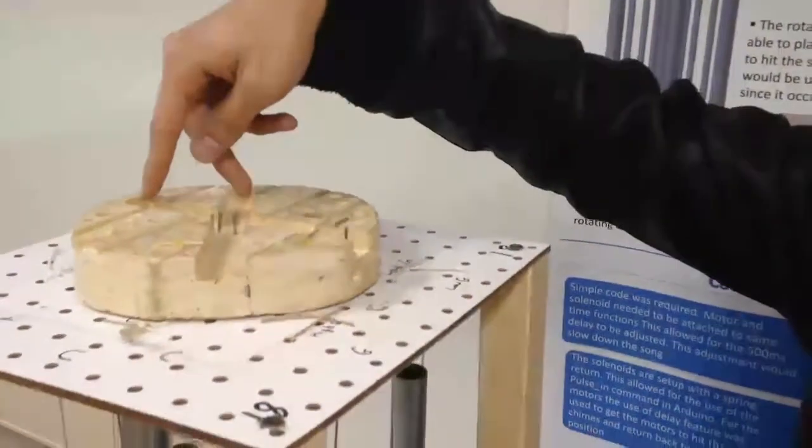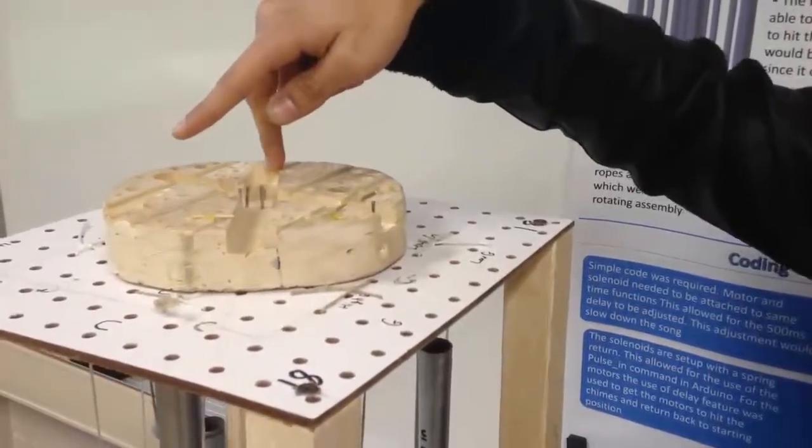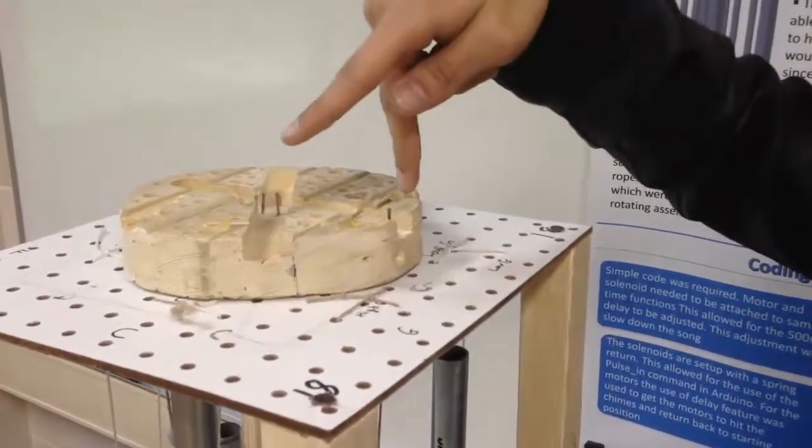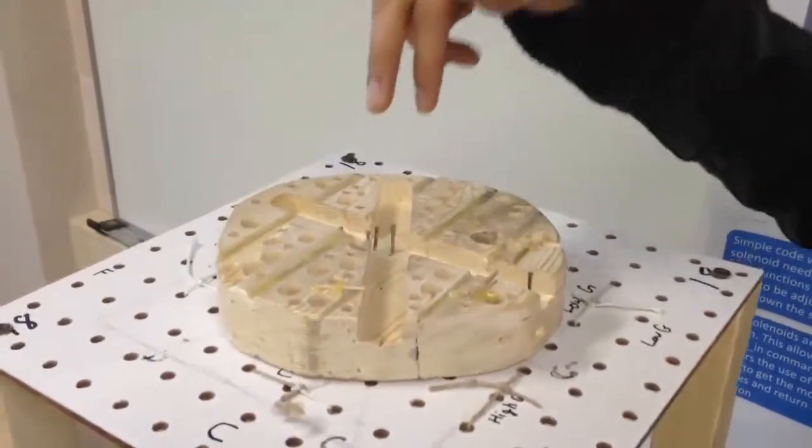This plate would have two solenoids, one placed here, the other placed here, and also two wooden levers, one placed here, the other placed here. These two wooden levers would be attached to their respective solenoids with string.